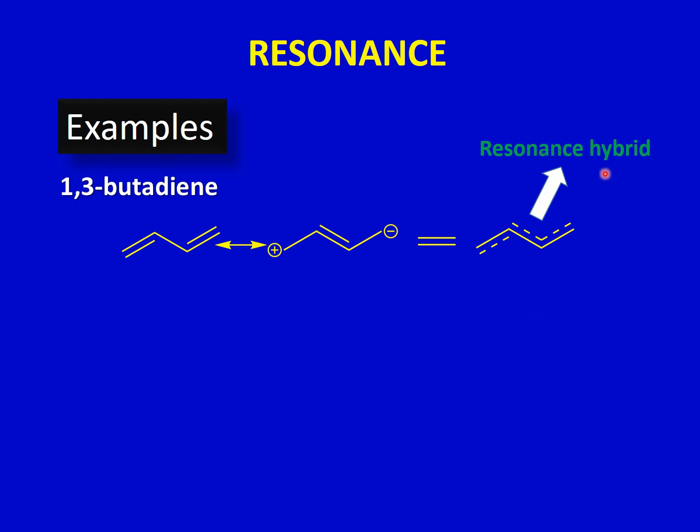This is not an equilibrium — these are not two different molecules; it is the same molecule resonating between these two forms. The molecule can be drawn as a resonance hybrid, also known as the mesomer. Resonance is hypothetical, so it does not mean that 1,3-butadiene sometimes exists in one form and sometimes in another. A molecule has only one structural formula.